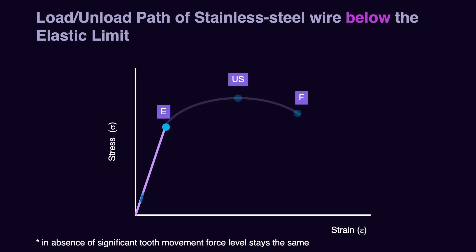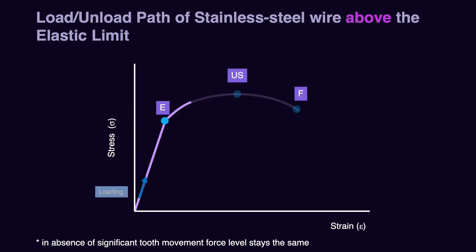Let's start with stainless steel. For stainless steel, until the elastic limit, the path of loading and unloading is the same — if you apply 100 centinewtons, it applies 100 centinewtons back to you. After the elastic limit there is a shift, but the relationship between load and unload remains linear and very predictable. For example, if I apply a spring behind a tooth at 100 centinewtons and the tooth does not move, one week later the force should still be 100 centinewtons, two weeks later still 100 centinewtons — because the wire is deflected and we are waiting for that energy to release through tooth movement.